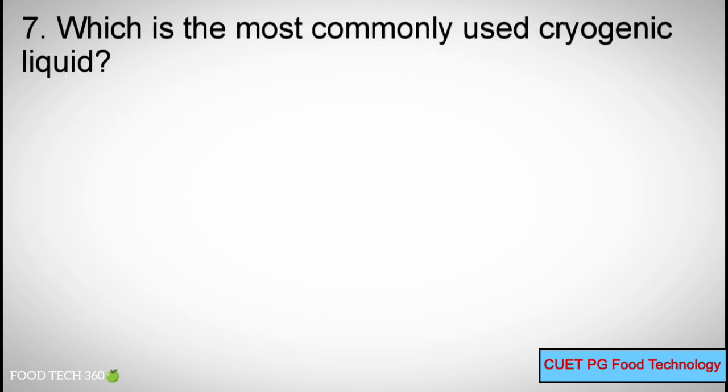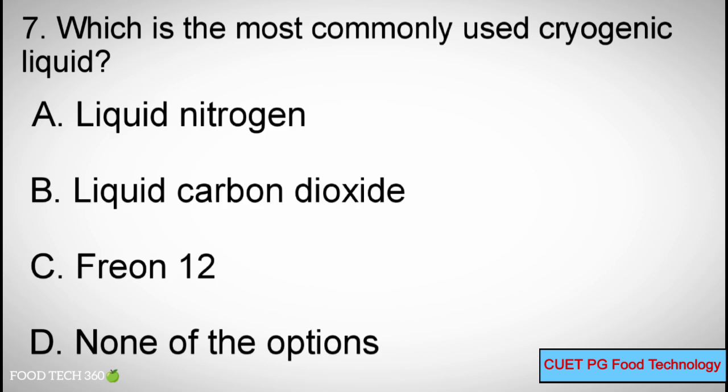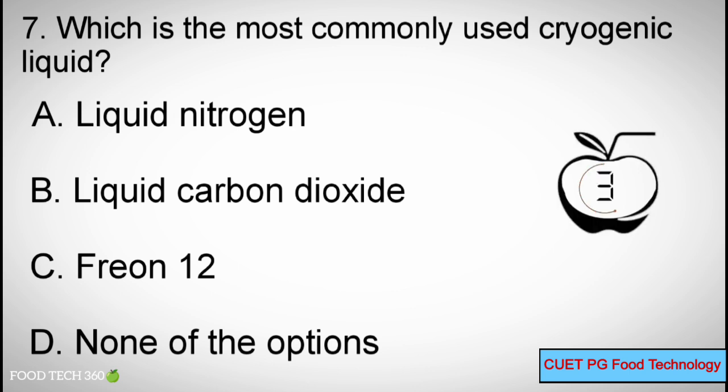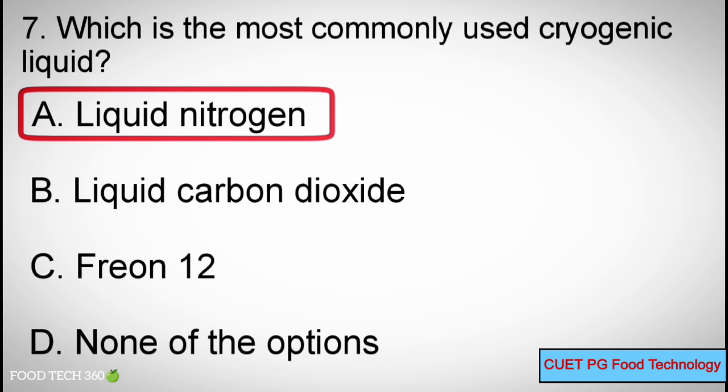Question number 7. Which is the most commonly used cryogenic liquid? Options A: Liquid nitrogen, B: Liquid carbon dioxide, C: Freon 12, D: None of the options. Correct answer: A, Liquid nitrogen.